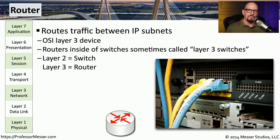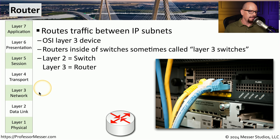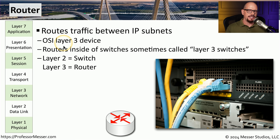A router allows us to take data on one IP subnet and route that information to a different IP subnet. These may be subnets that are next to each other in the same data center, or these IP subnets may be located in different parts of the world. We refer to a router as an OSI layer 3 device. At OSI layer 3, or the network layer, we're referring to IP addresses, and IP addresses are exactly what's used by a router to determine the next hop for this information.